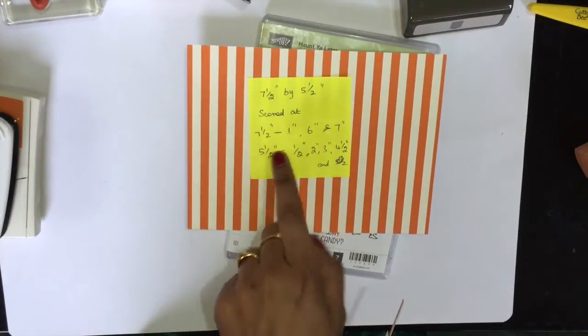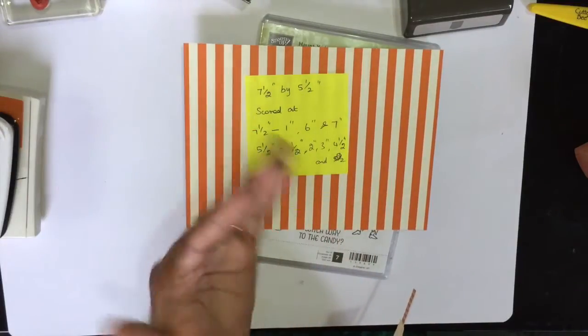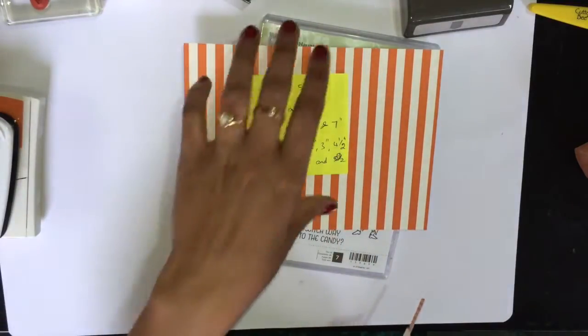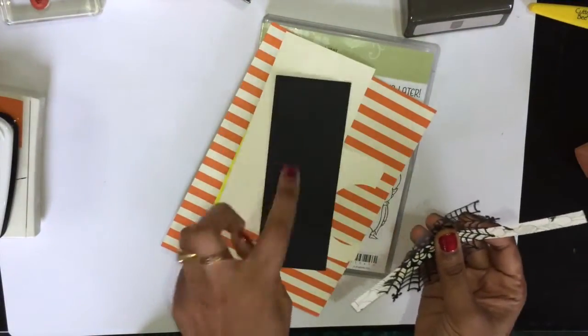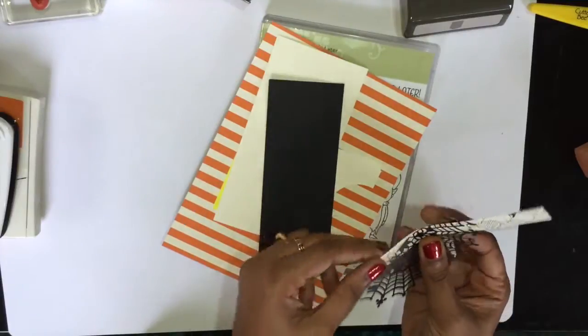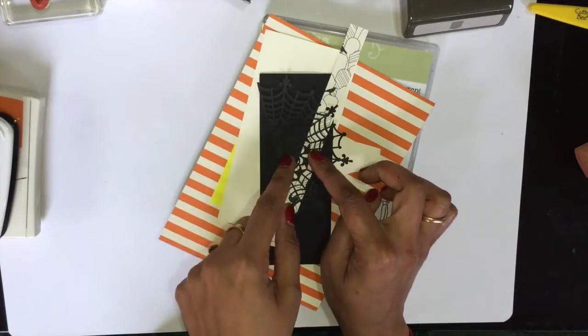You don't need to worry about any measurements. Everything will be in the description below the YouTube. You need a scrap piece of paper of Very Vanilla, Basic Black, a small piece of designer series paper, and half of your spider web doilies.